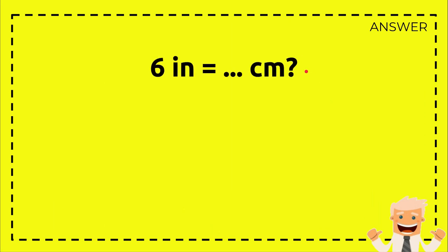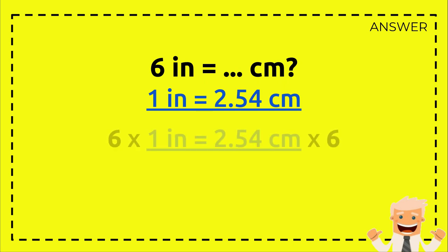First, let's write down again the question: 6 inch equals how many centimeters. Alright, and then let's write down the formula again. So 1 inch equals 2.54 centimeters. This is how you answer the question. First you need to write down again the whole formula.